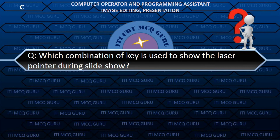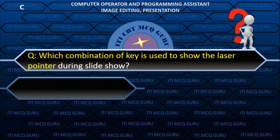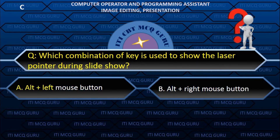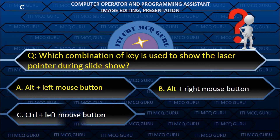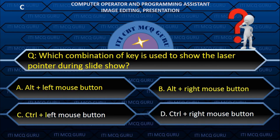Which combination of keys is used to show the laser pointer during a slide show? C. Control plus left mouse button.